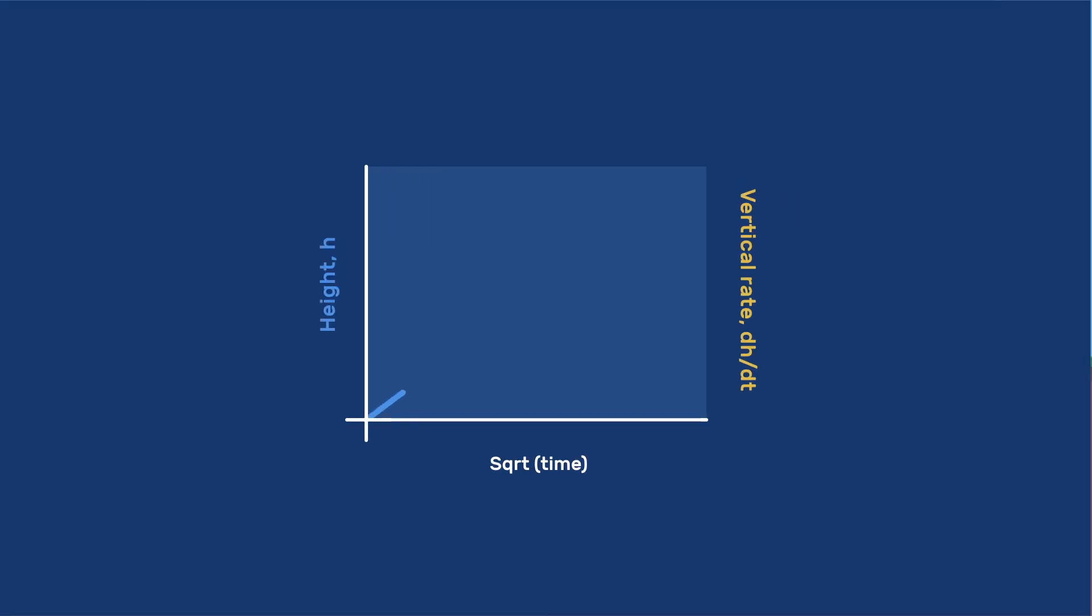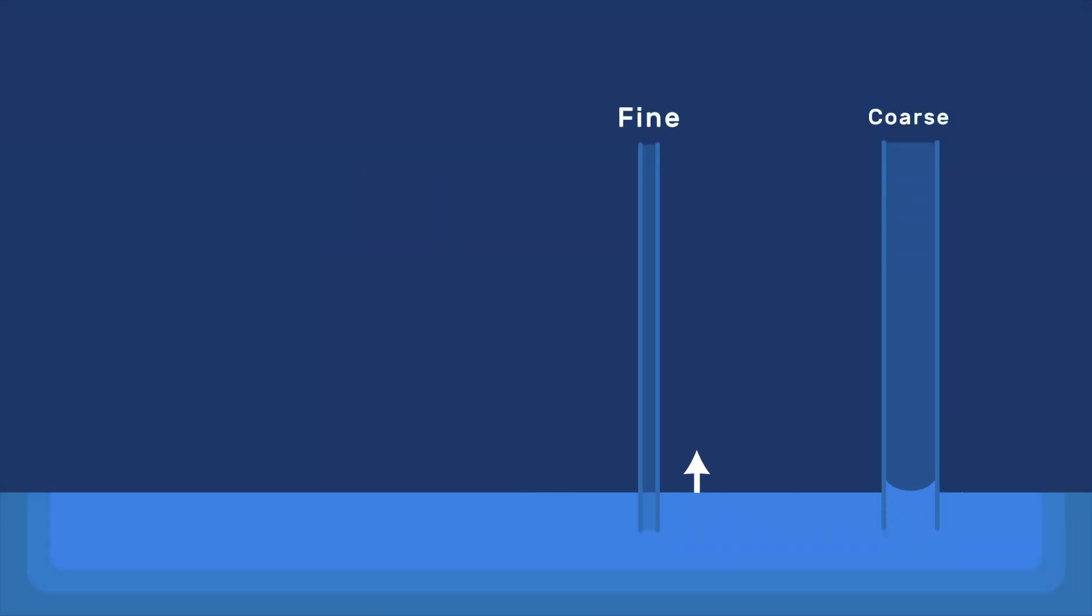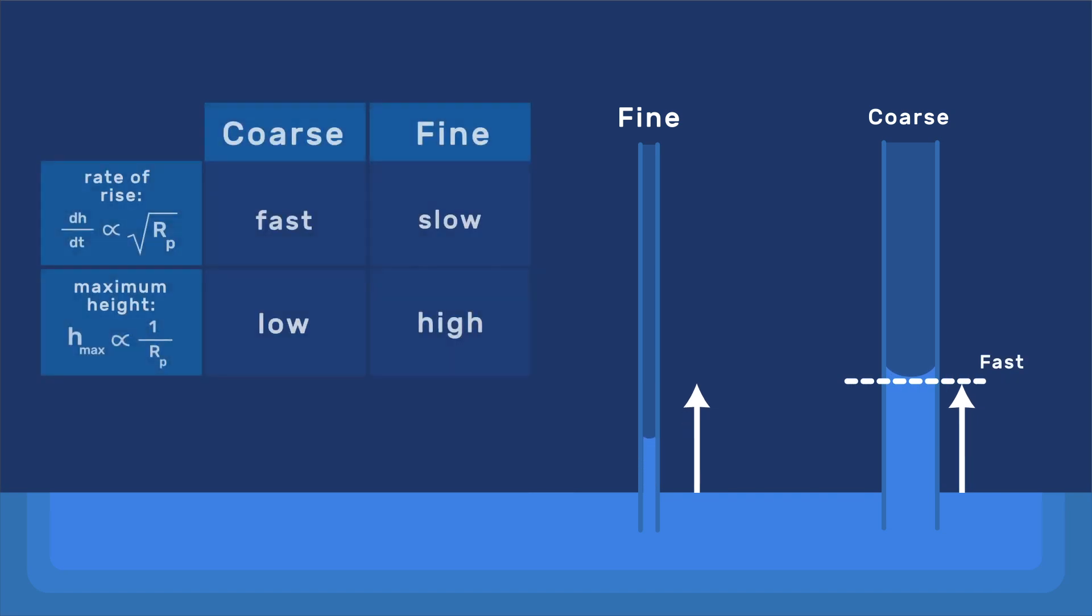In conclusion, the amount of absorbed water increases with the square root of time, so the rate of rise decreases as the water advances. Moreover, the rate of liquid penetration into a porous material increases with pore size, while the maximum height of capillary rise increases as the pore size decreases.